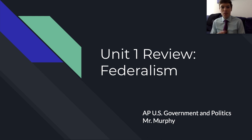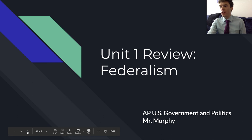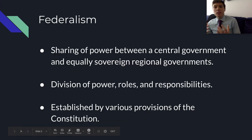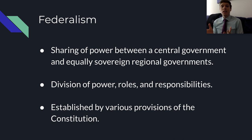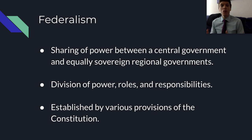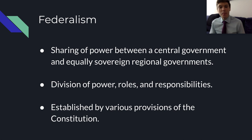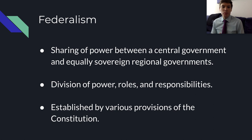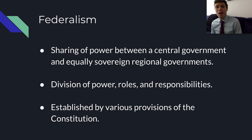Starting with the definition of federalism: in creating and empowering the new federal government, the framers debated where the power should lie. They had fought a revolution against someone they perceived as a tyrant, so they wanted to move away from centralizing power. This is where federalism emerges — the sharing of power between a central government and equally sovereign regional governments, states in our case.